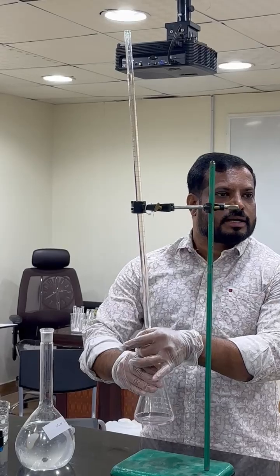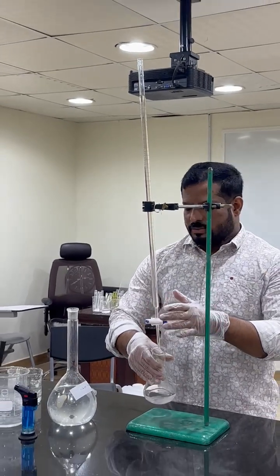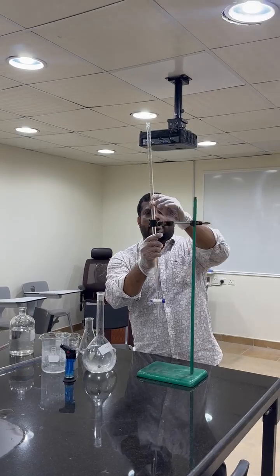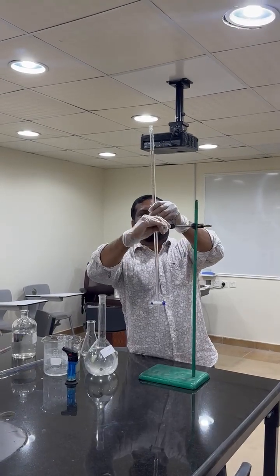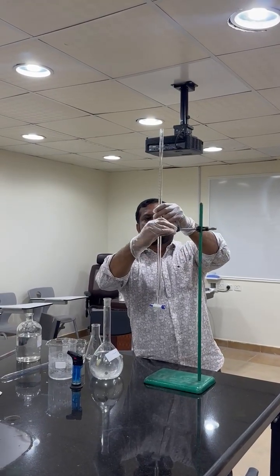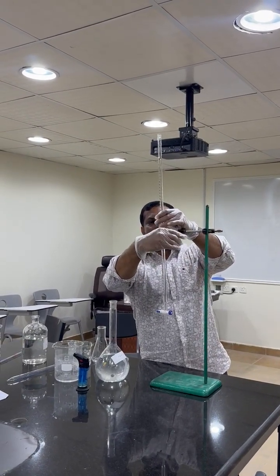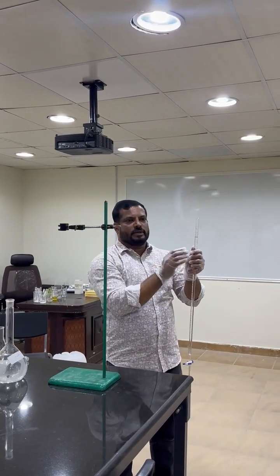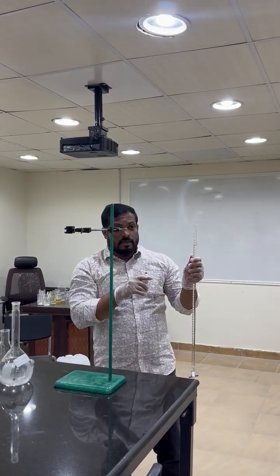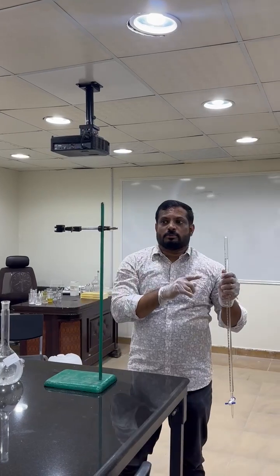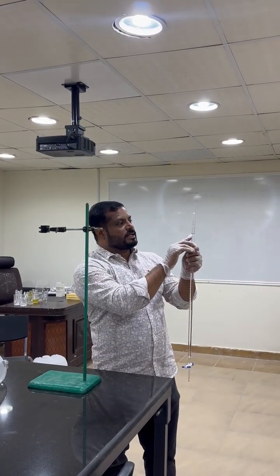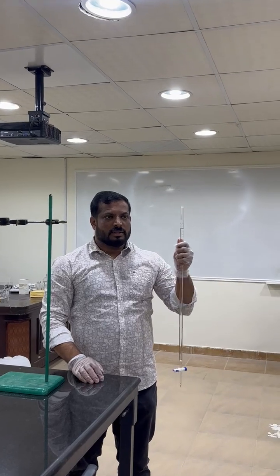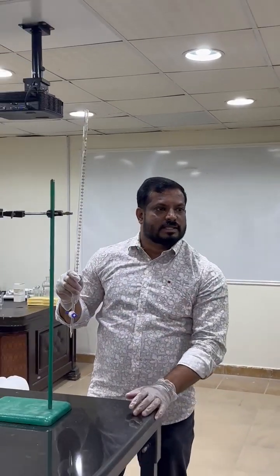That means our titration is completed. Now carefully remove your burette. In a parallel way, you want to measure how much ml you consumed for this titration. Here I consumed 1.9 ml. That is the volume of HCl.